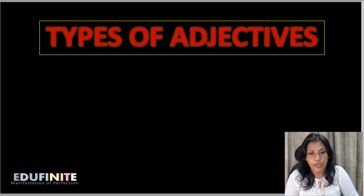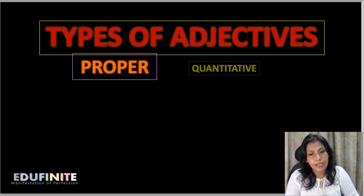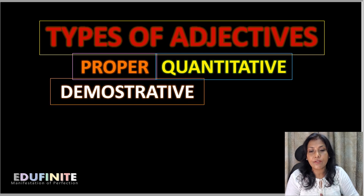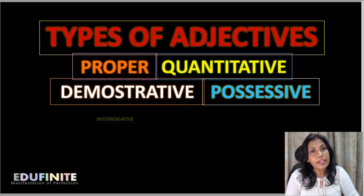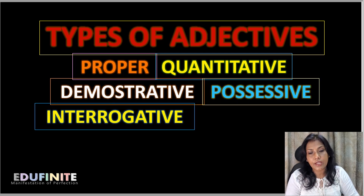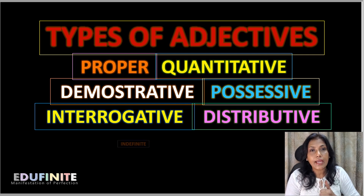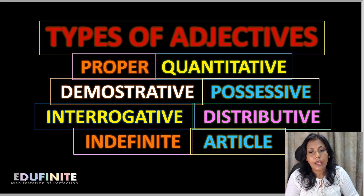Now the types of adjectives are: proper adjective, quantitative adjective, demonstrative adjective, possessive adjective, interrogative adjective, distributive adjective, indefinite adjective, and articles. I'll be dealing with all of these in this particular session.